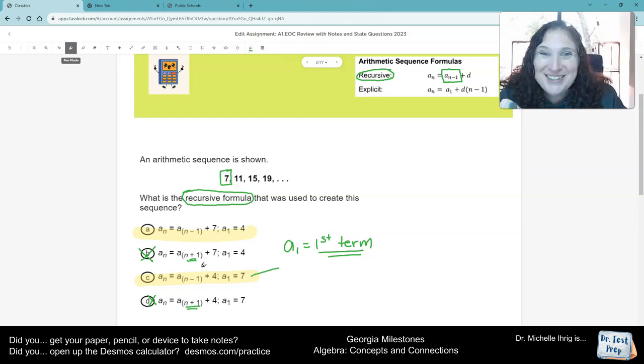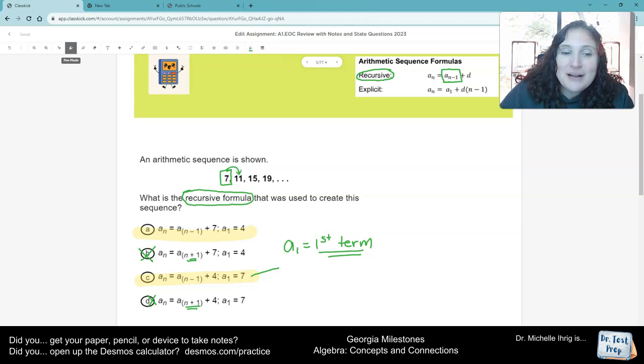Now, what they're trying to do is they're trying to trick you. And how they're tricking you is, remember, how do we go from 7 to 11? We add 4. How do we go from 11 to 15? We add 4. How do we go from 15 to 19? We add 4. That adding 4 is the common difference.